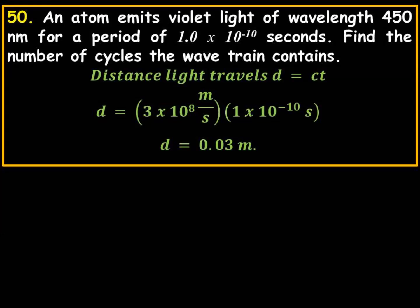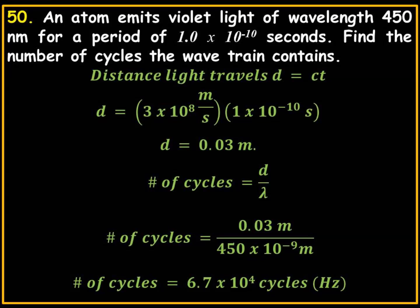And d equals 3 times 10 to the 8th meters per second times 1 times 10 to the negative 10 seconds, and that's going to have a distance of 0.03 meters.